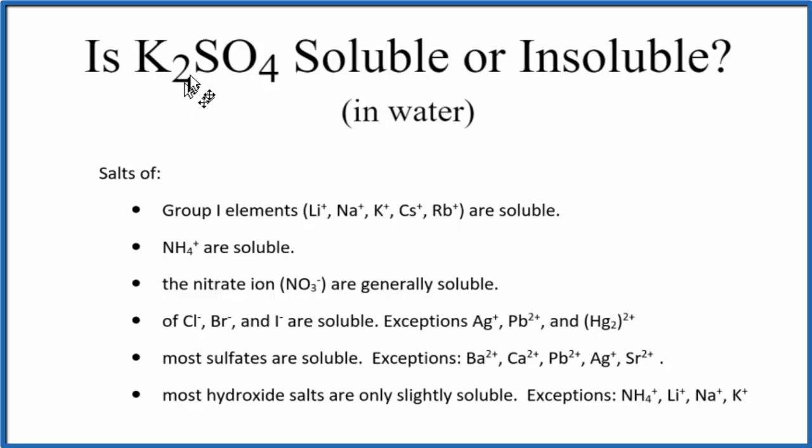So K, potassium, that's in group one on the periodic table, that first column. In group one elements, they will be soluble in water. So K2SO4, according to our solubility rules, that's going to be soluble in water.